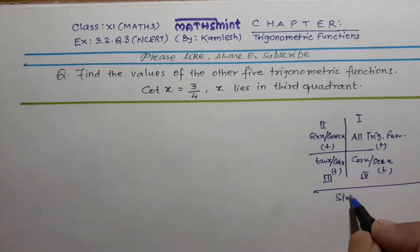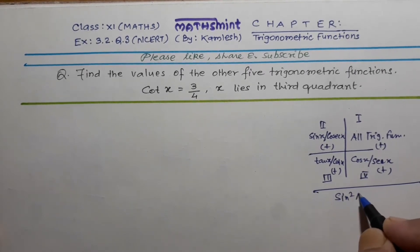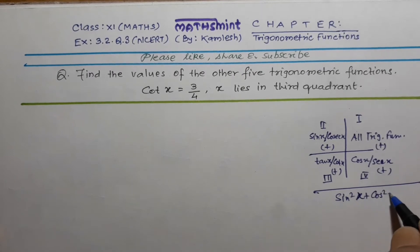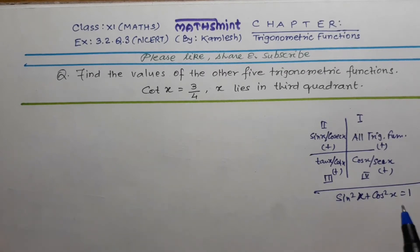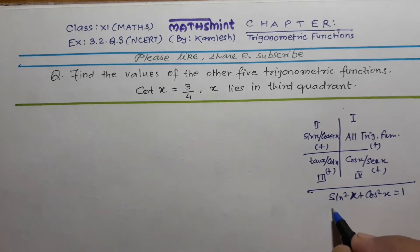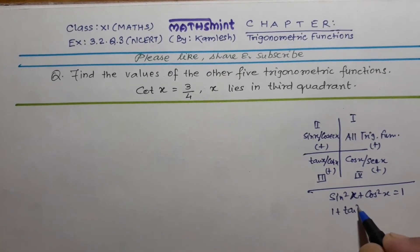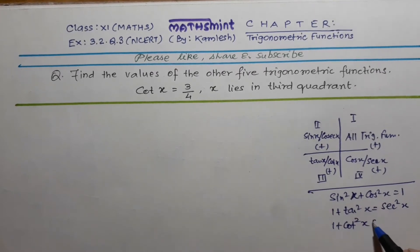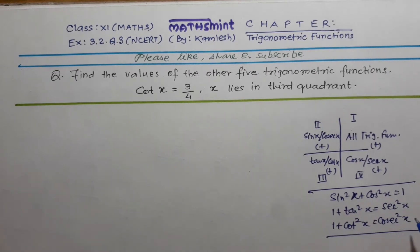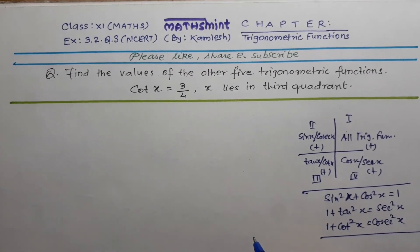The three basic formulas are: first, sin²x + cos²x = 1, by which we can get the value of sin or cos. Second, 1 + tan²x = sec²x. And third, 1 + cot²x = cosec²x. These three basic formulas will be used in solving the question.